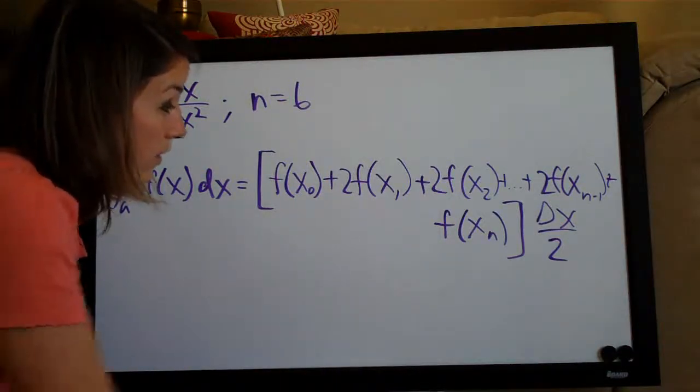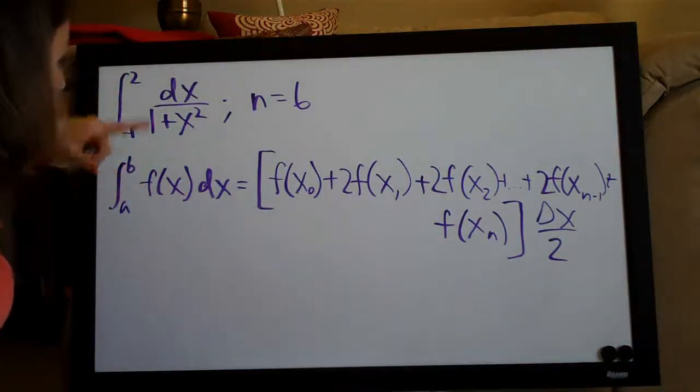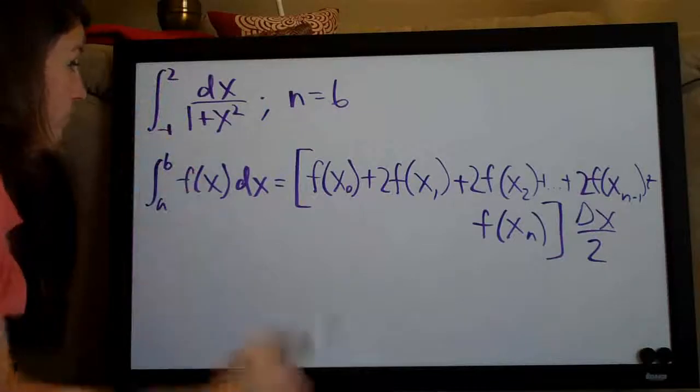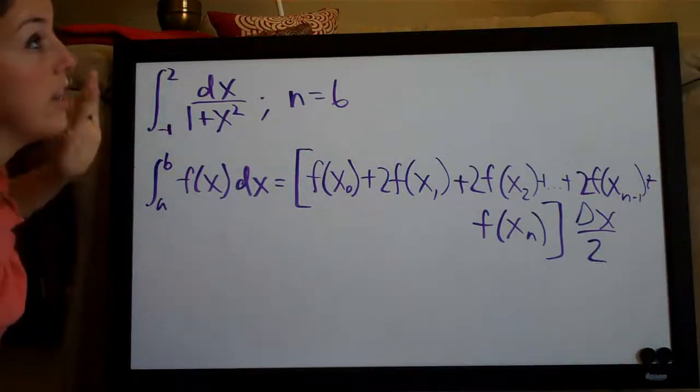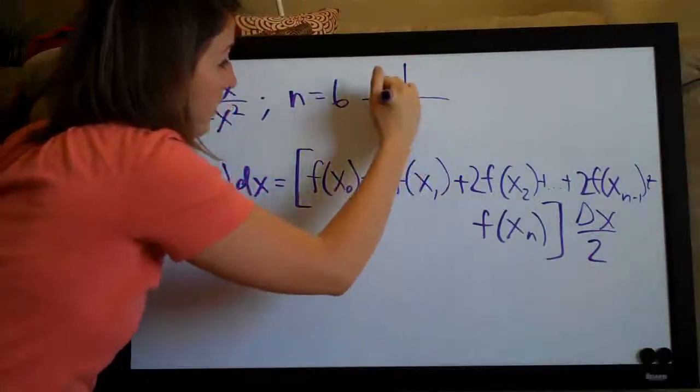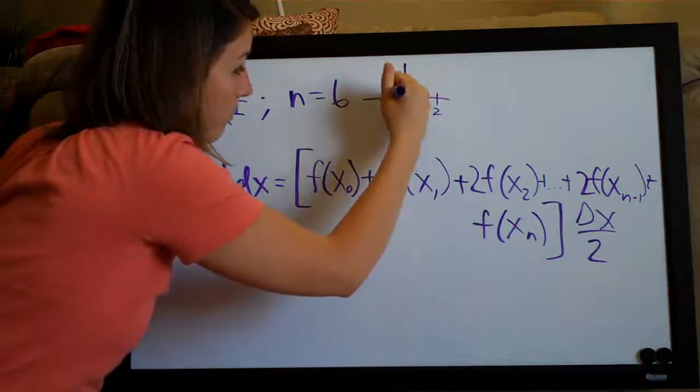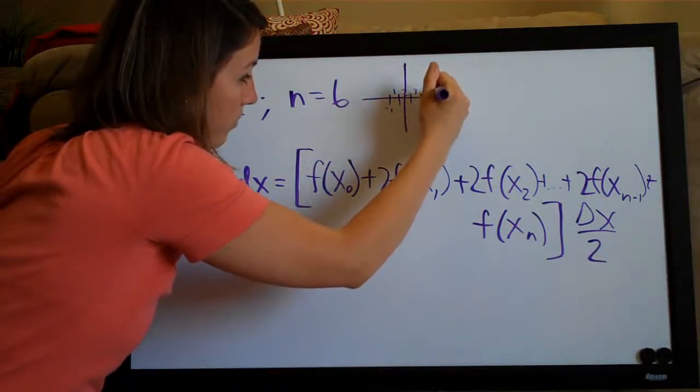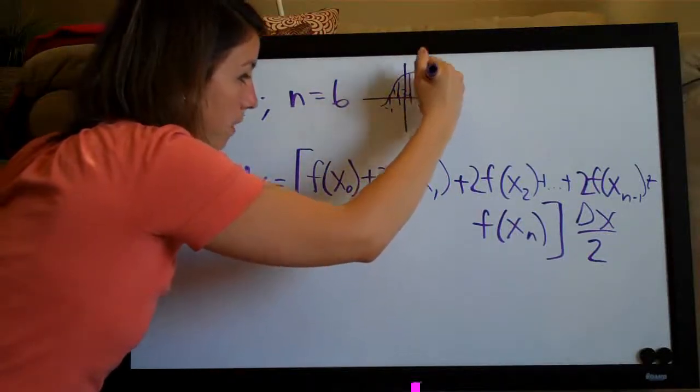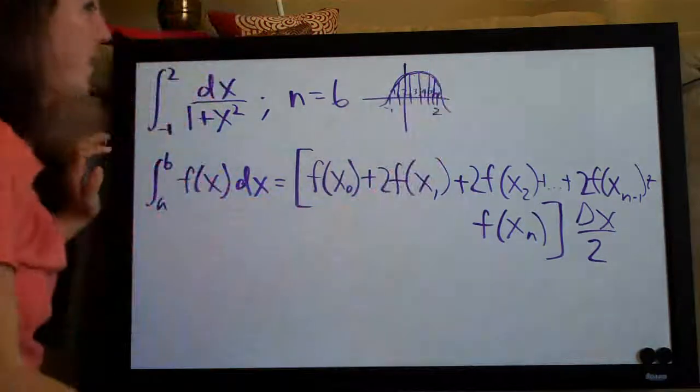So this is the formula that we're given and basically all it's saying is that, well the first thing we need to do, let's forget about the formula for now. The first thing we need to do is find delta x. So that's always your first step and the way that we find delta x or the change in x is to use the number of trapezoids that they have already told us they want us to use and the range negative 1 to 2. So they've told us that they want us to divide the range negative 1 to 2 into 6 different trapezoids.